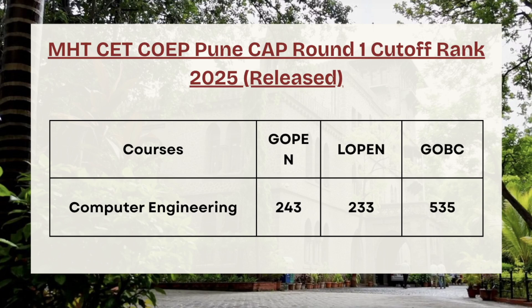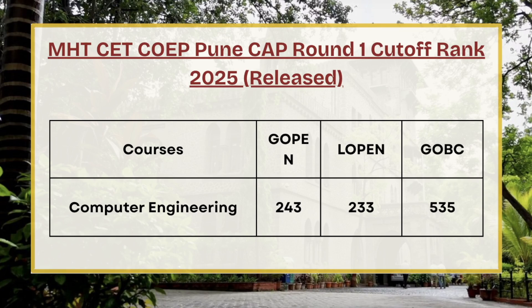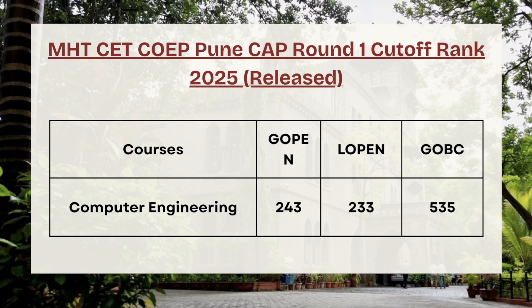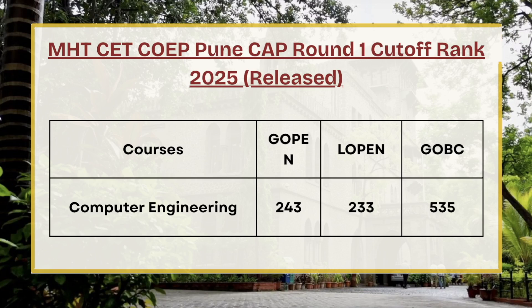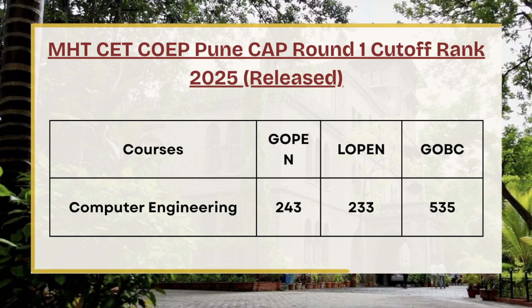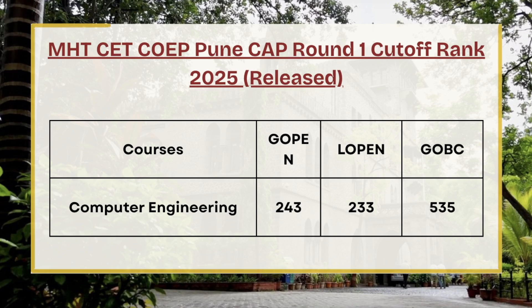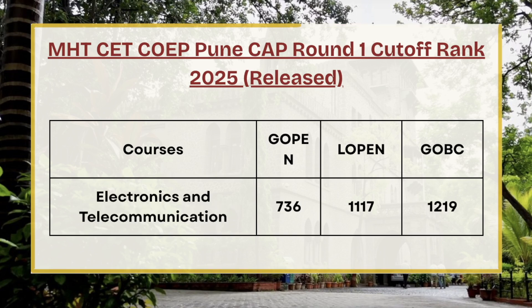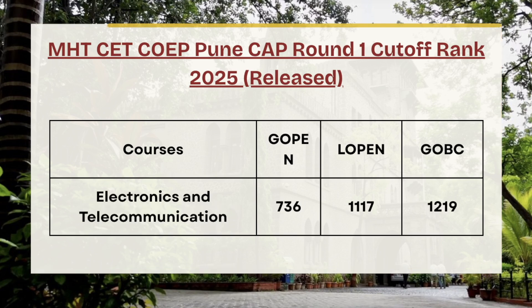Next in the list we have Computer Science and Engineering. As you can see on screen, for G-Open the cutoff rank is 243, for L-Open the cutoff rank is 233, and for GOVC the cutoff rank is 533.